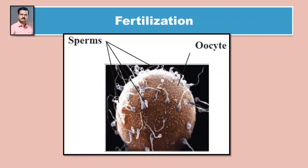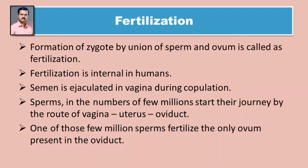Next, let us study fertilization. Formation of a zygote by union of sperm and oocyte is called fertilization. Fertilization is internal in humans - manaavamadhe phalnaachi hi prakriya shariraachya aatmade hote. Semen is ejaculated into the vagina during copulation.